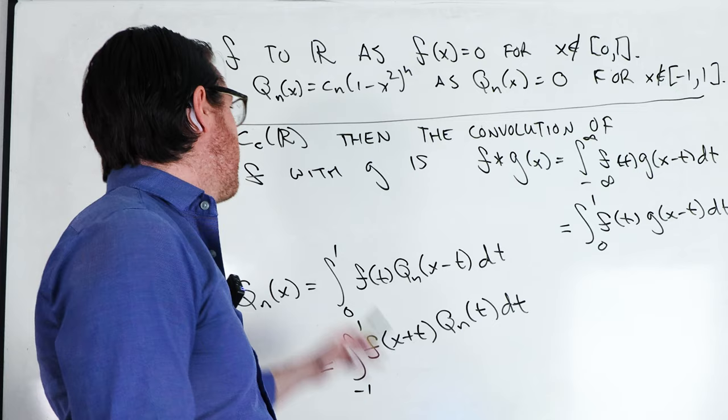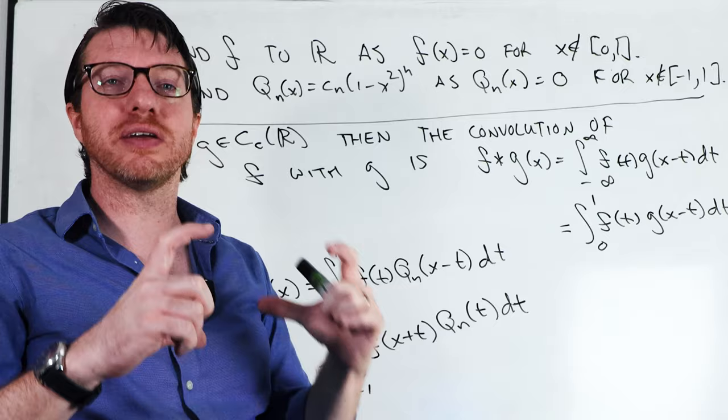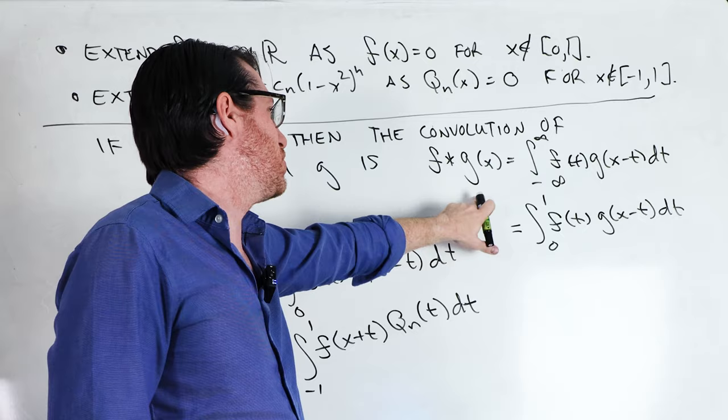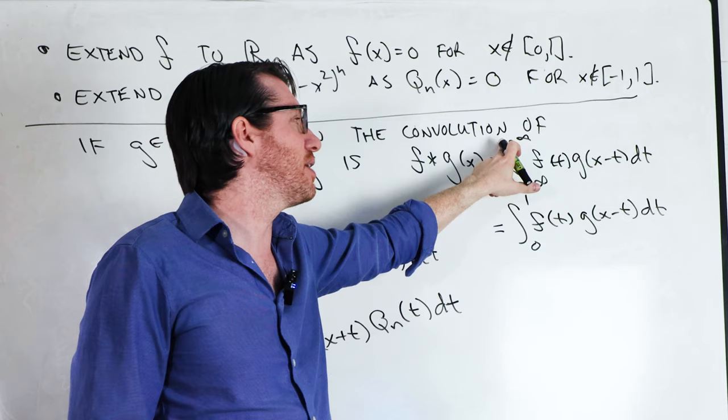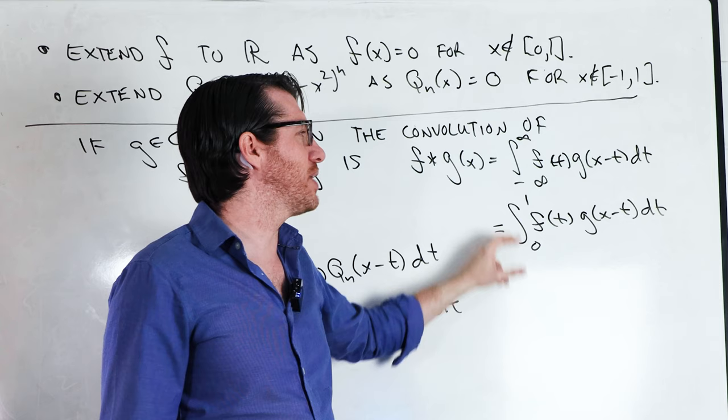A convolution is defined for functions that are compactly supported — meaning they're zero outside of some closed interval. We define f convolved with g as the integral from negative infinity to infinity of f(t) times g(x minus t) dt. Since f is only supported on [0, 1] and zero outside, we can reduce this integral to just the integral from 0 to 1 of f(t) times g(x minus t) dt.